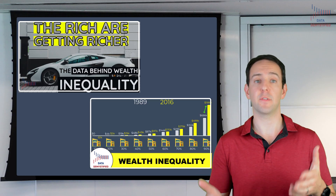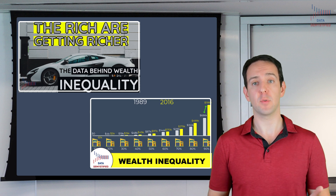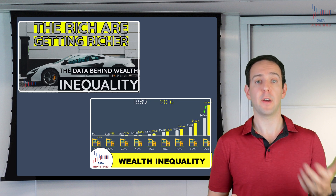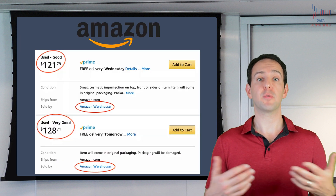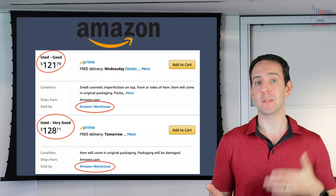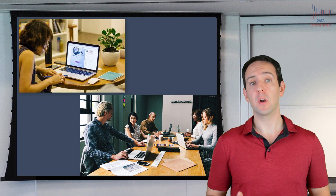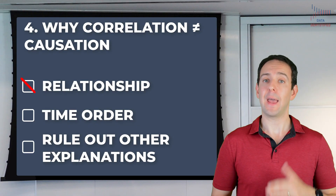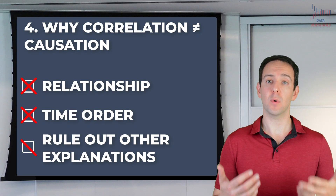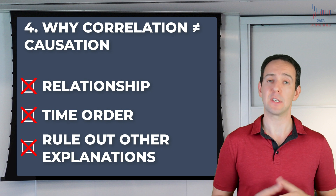We can use the exact same technique to test other, maybe less important causal claims — like the effectiveness of different YouTube thumbnails, by randomly assigning some viewers to see one type of thumbnail and others to see another. Or whether raising prices on a product on Amazon causes a decrease in sales. Or whether people are more productive working from home or working at the office. As long as you randomly assign people to different groups and then measure some meaningful outcome, you can make causal claims. Anything short of that, and you're stuck in the world where correlation doesn't necessarily imply causation.